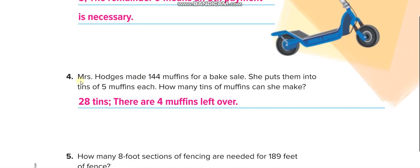Here, Mrs. Hodges made 144 muffins for a bake sale. She puts them into tins of 5 muffins each. So how many tins of muffins can she make? When you divide 144 with 5, you'll get 28. And the remainder is 4. So 4 muffins still left over.